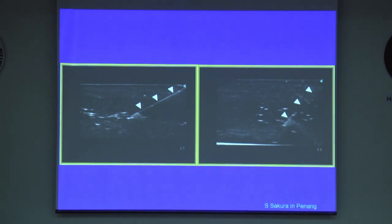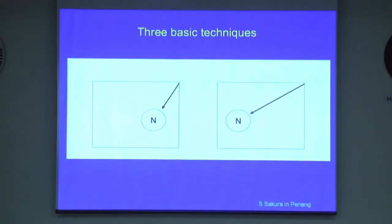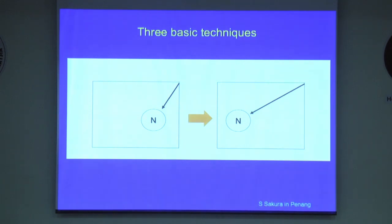As a result, a number of investigators have attempted to improve visibility of a needle inserted at a steep angle. There are three basic techniques you should use on a regular basis. First, you need to move the transducer toward you so that the target nerve is always located on the further side of the screen. This will give you as shallow an approach angle as possible.